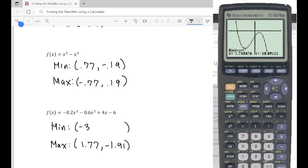So our min is at negative three point seventy seven and negative eighteen point eighty nine.